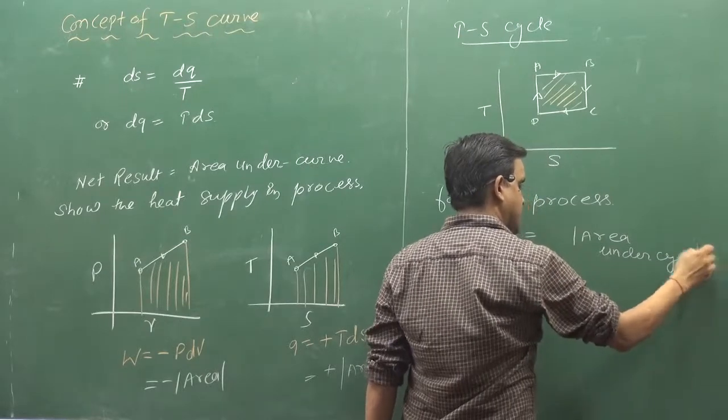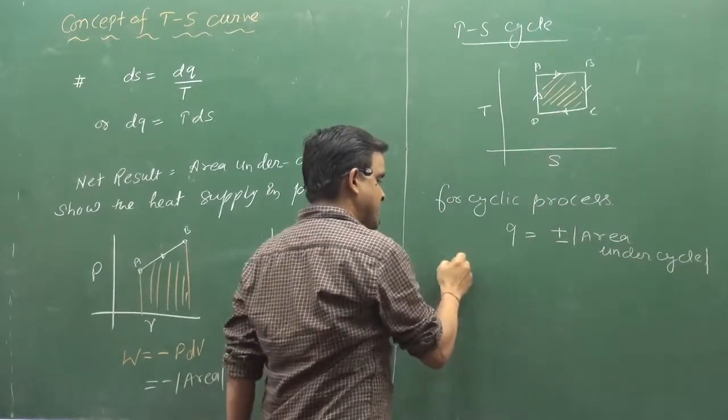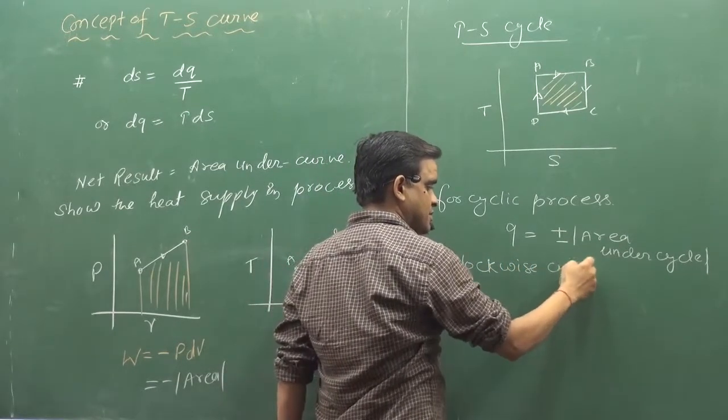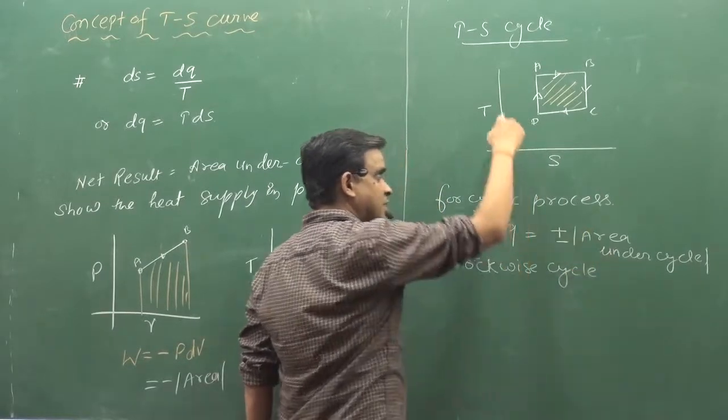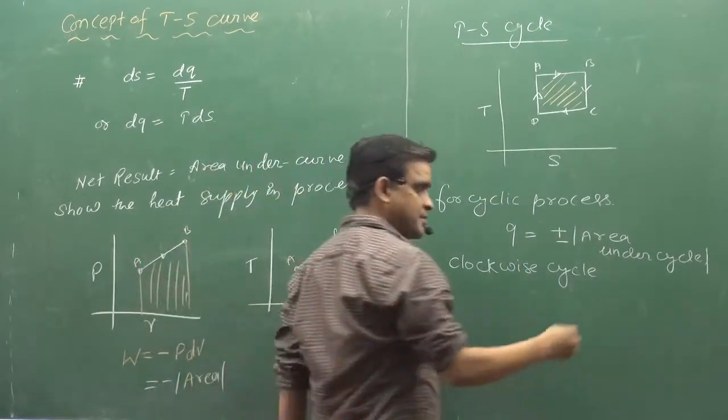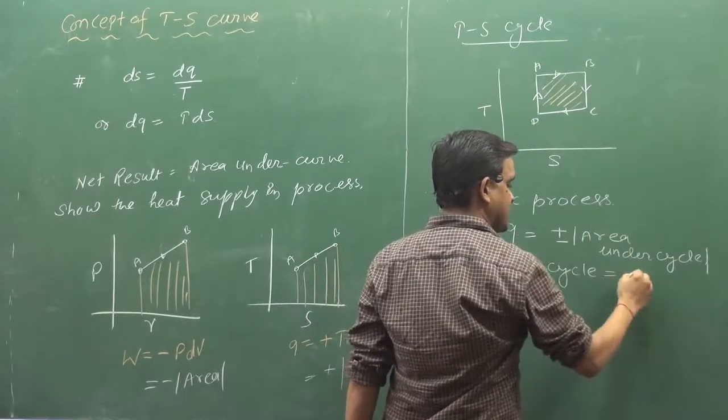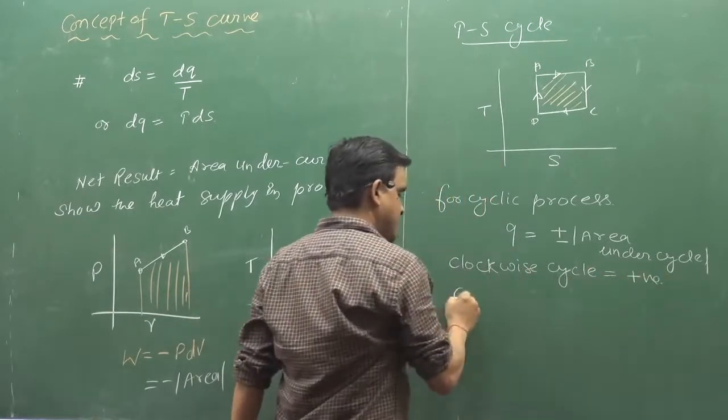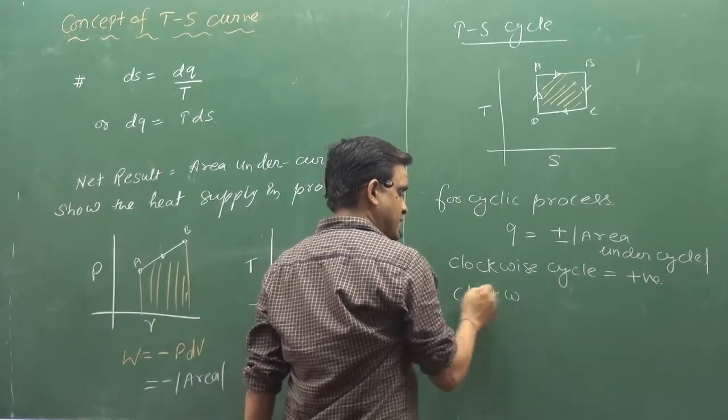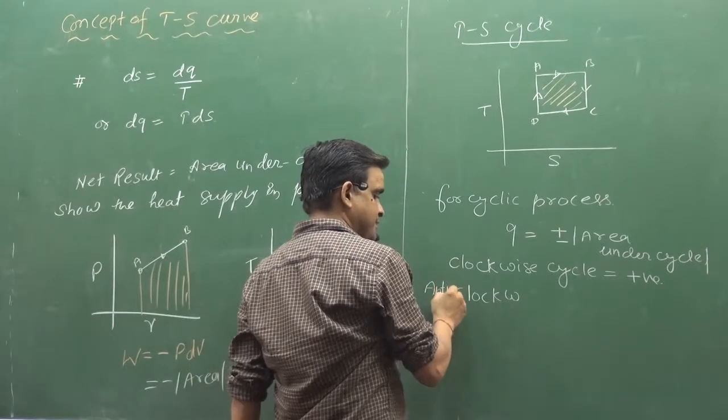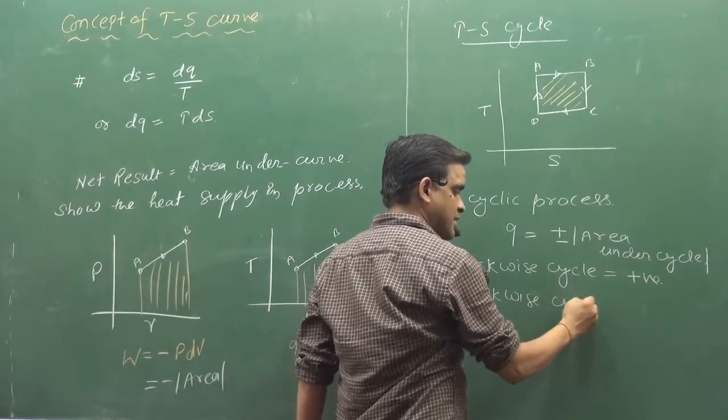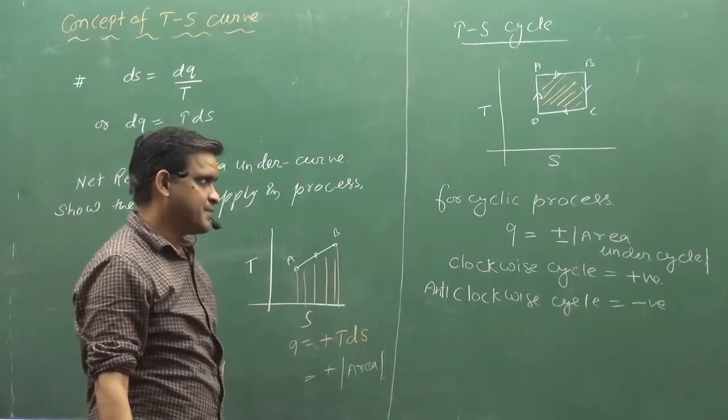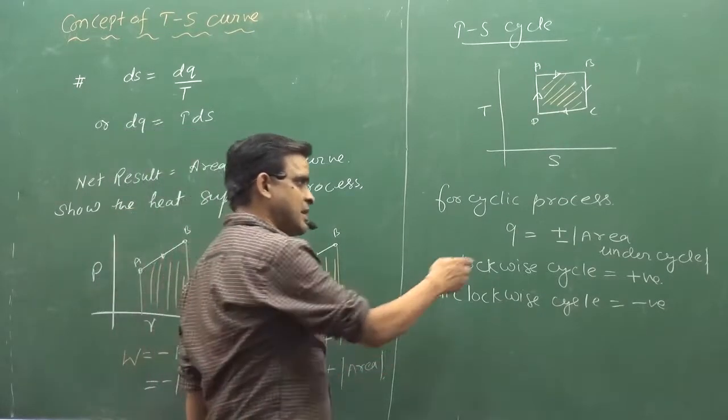Under Cycle and plus minus clockwise. Clockwise Cycle. Here is a positive in the case of work done and in the anti-clockwise, what will be for you? Negative. These two points are in our case.